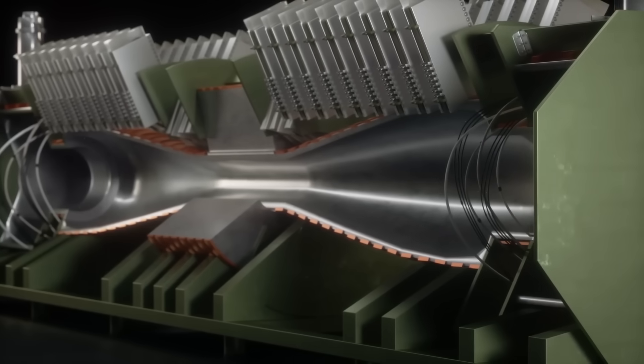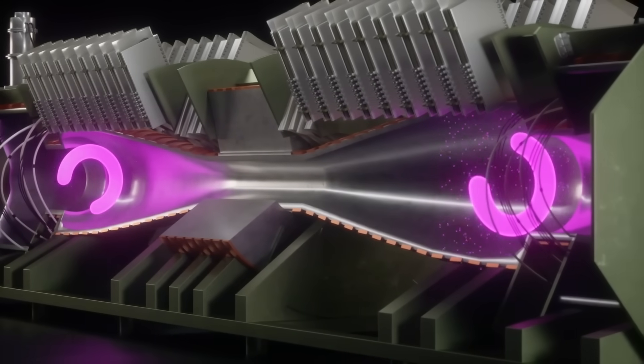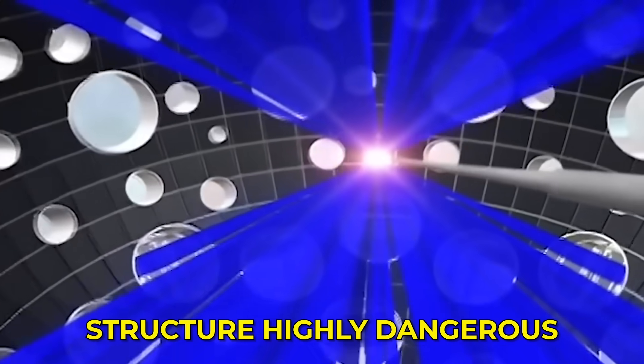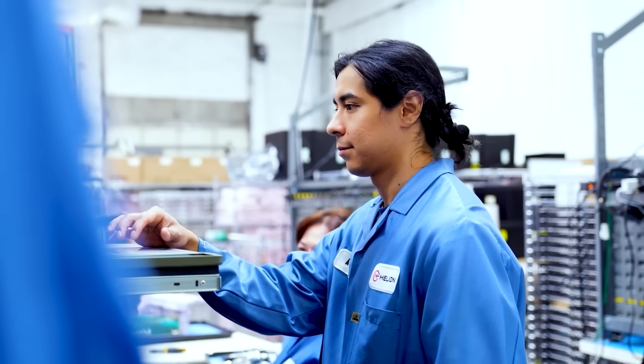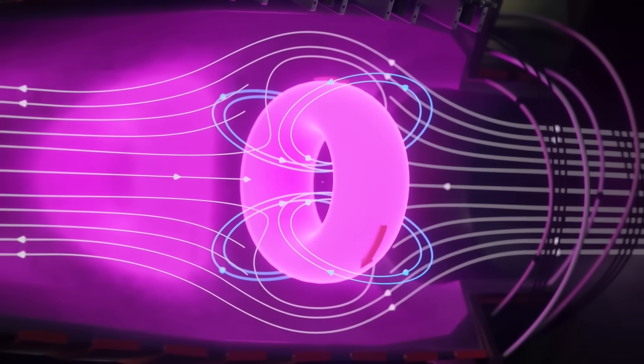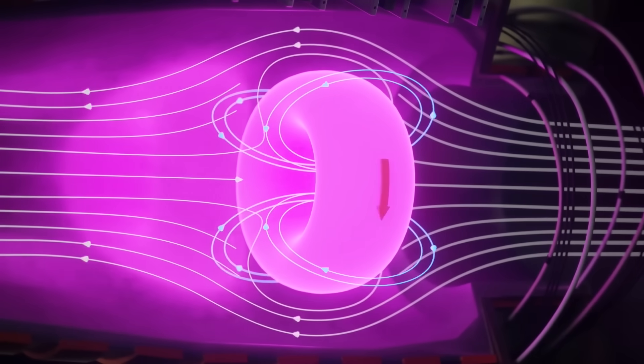In images of Helion's prototype devices, there is no evidence of such heavy shielding. If the Trenta machine were producing energy at a true power plant level, the resulting radiation would make the surrounding structure highly dangerous. This is not a problem that can be ignored or designed away. It is a fundamental part of how fusion reactions behave.